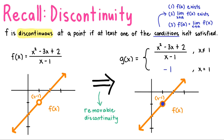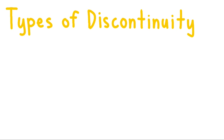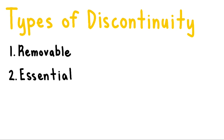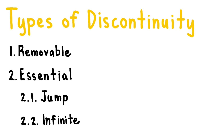This is one of the types of discontinuities, and in this video we'll discuss the other types. The types of discontinuity are: first, removable discontinuity; next, essential discontinuity — and under this we have two subtypes: jump essential discontinuity and infinite essential discontinuity. We'll go over each of these one by one.